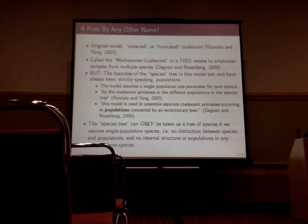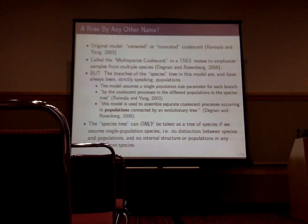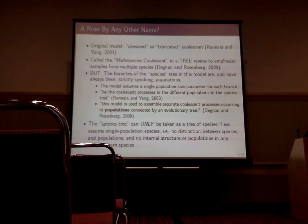This is the species delimitation section. The multi-species coalescent is obviously one of the most popular — if not the most popular — model for species delimitation out there. I'm not going to go into the mechanics of the model, but I'd like to talk a little about the history of the terminology. When Rannala and Yang first described this model formally in 2003, the paper referenced it as the censored or truncated coalescent.